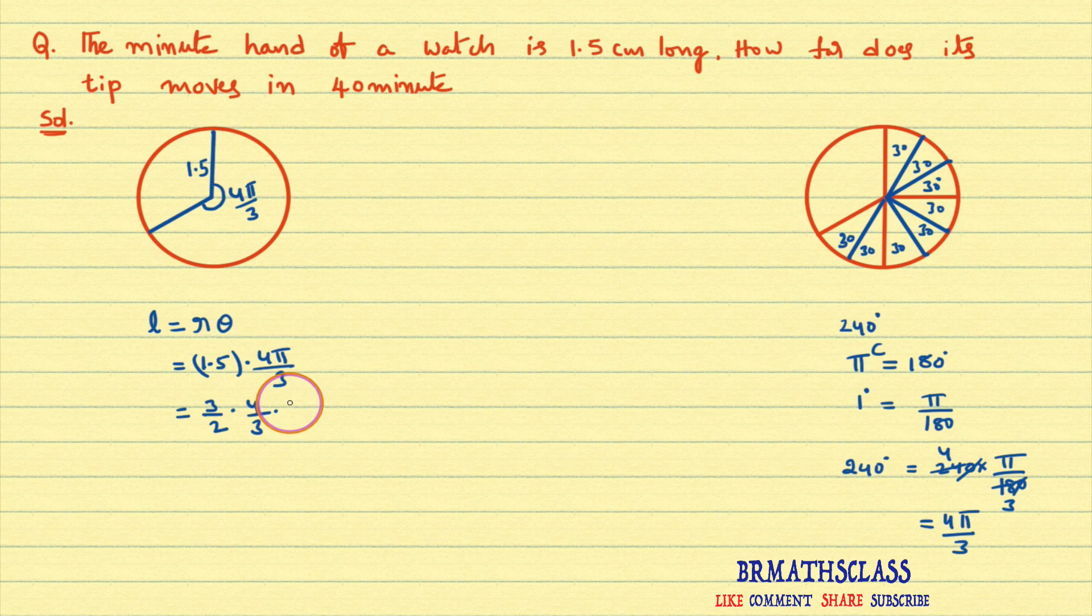1.5 into 4 by 3, and here in radian measure pi can be written as 22 divided by 7. Now you see this 3, 3 will get cancelled. 2 in this 4, 2 times. That equal to 2 into 22 by 7. 22 by 7 is 3.14. That equal to 6.28.